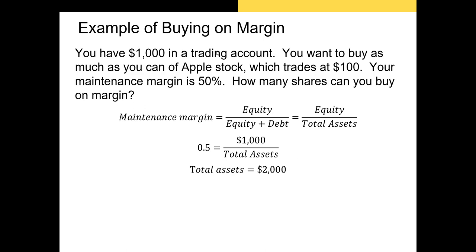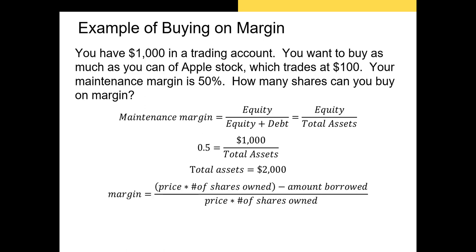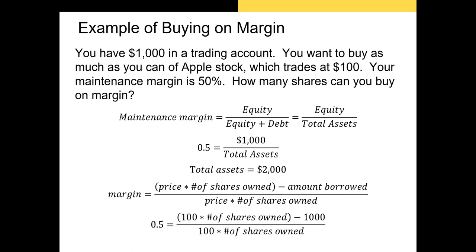Substituting the information into the equation and solving for the number of shares owned: we plug in the maintenance margin, the Apple stock price of $100 per share, and the $1,000 borrowed. Since equity plus debt equals total assets, we solve for the number of shares owned — in this case, you own 20 shares.